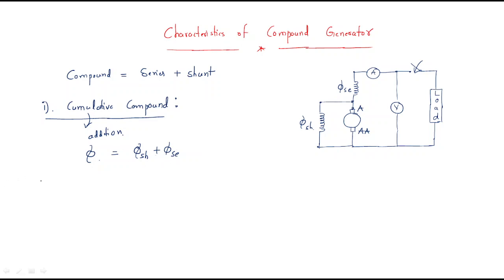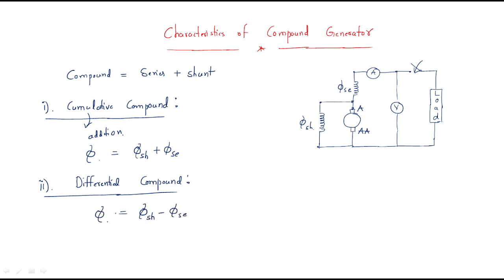We have another type — the differential compound generator. In the differential compound generator, shunt flux and series flux are different from each other, meaning the total flux equals shunt flux minus series flux. In the cumulative case the flux is more because both fluxes are added; in the differential case the flux is less because the two fluxes oppose each other.